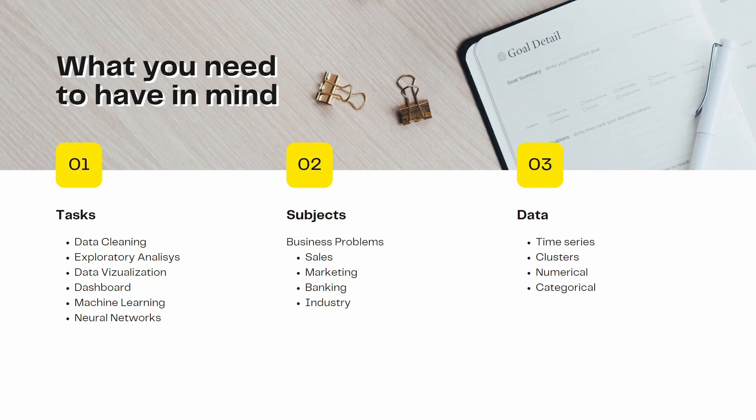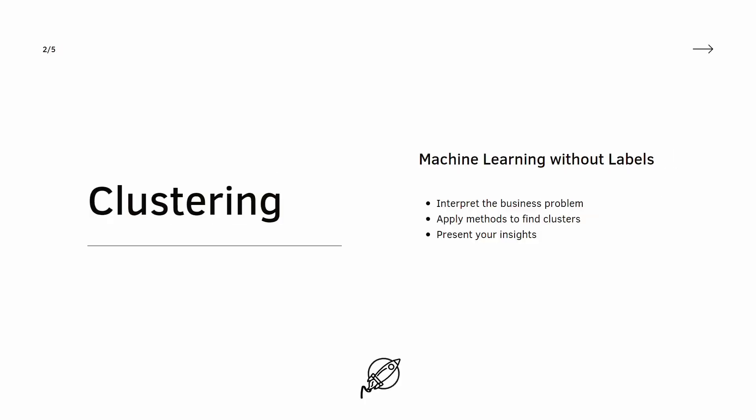If you are starting to build your first portfolio, you may want to start with these kinds of projects. The first one is clustering — a common machine learning project where you don't have labels. You need to interpret your data and the business problem you are trying to solve, apply the methods that fit the problem, and then present your insights. You should not only have the code but also explain what you are trying to do and why.